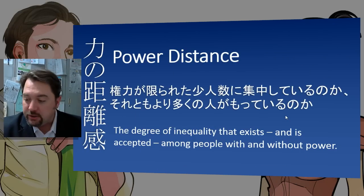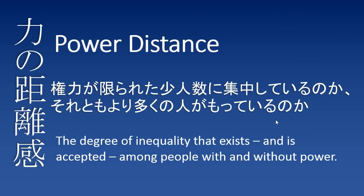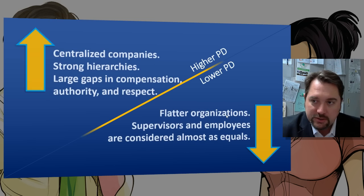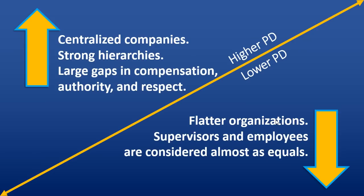The first dimension is power distance. This is the degree of inequality — or more precisely, the degree to which societies will tolerate big gaps in power. In organizations, you might see this as a more vertical versus flat structure. A higher power distance score means a more centralized hierarchy, large gaps in compensation between groups, and bigger gaps in authority and respect shown to certain individuals.